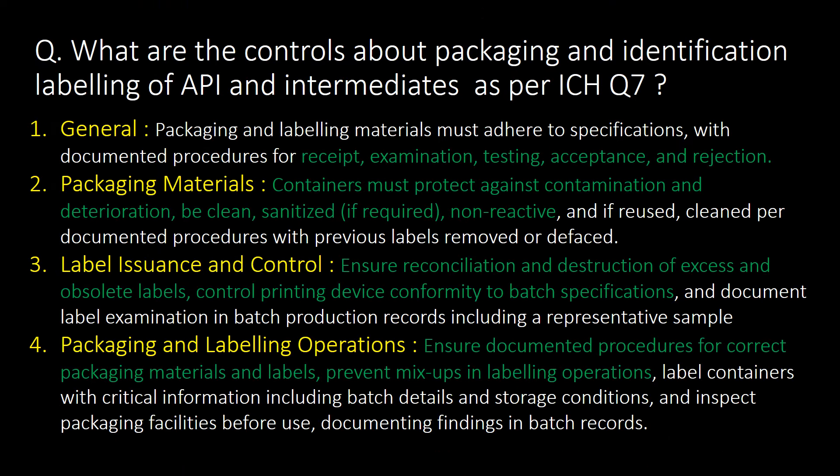What are the controls about packaging and identification labelling of APIs and intermediates as per ICH Q7? There are four important controls: 1. General; 2. Packaging materials; 3. Label issuance and control; and 4. Packaging and labelling operations.